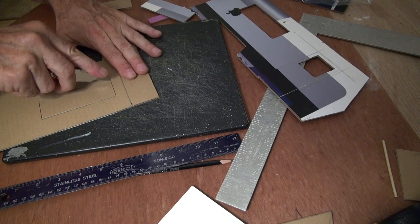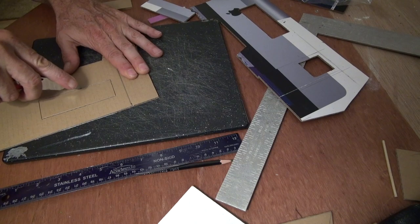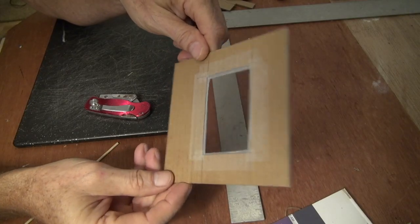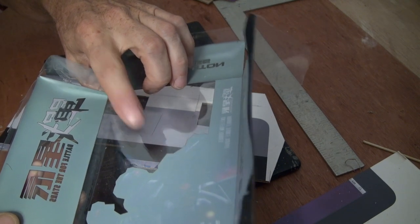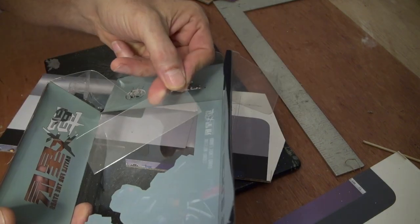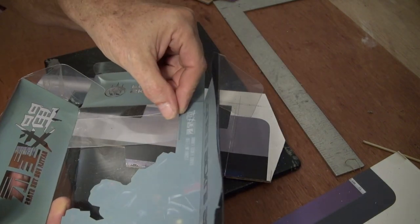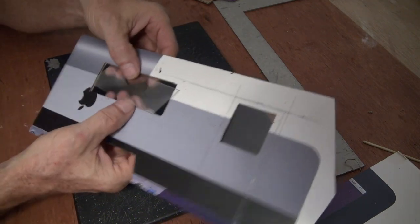I cut the windows out and then I tape some plastic from some packaging, some firm plastic that I use as the window. I keep all the packaging so I can recycle that, and then I've got a window.